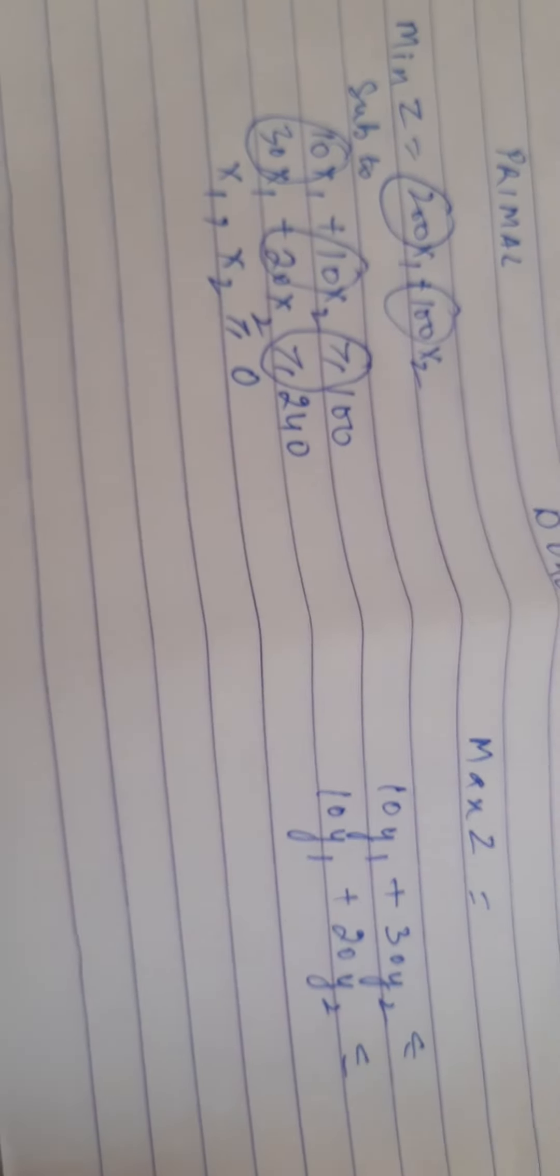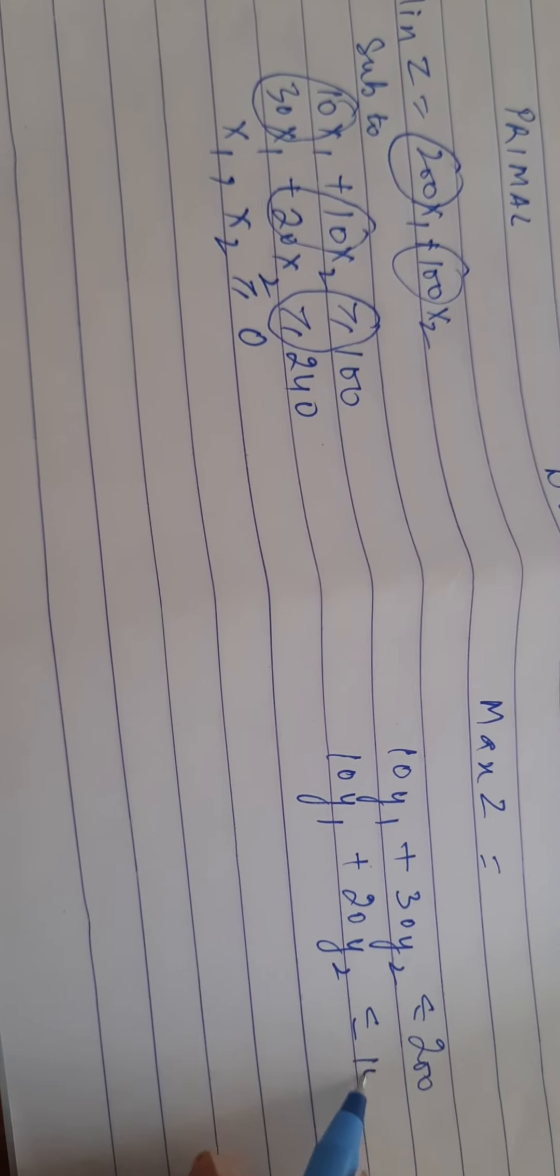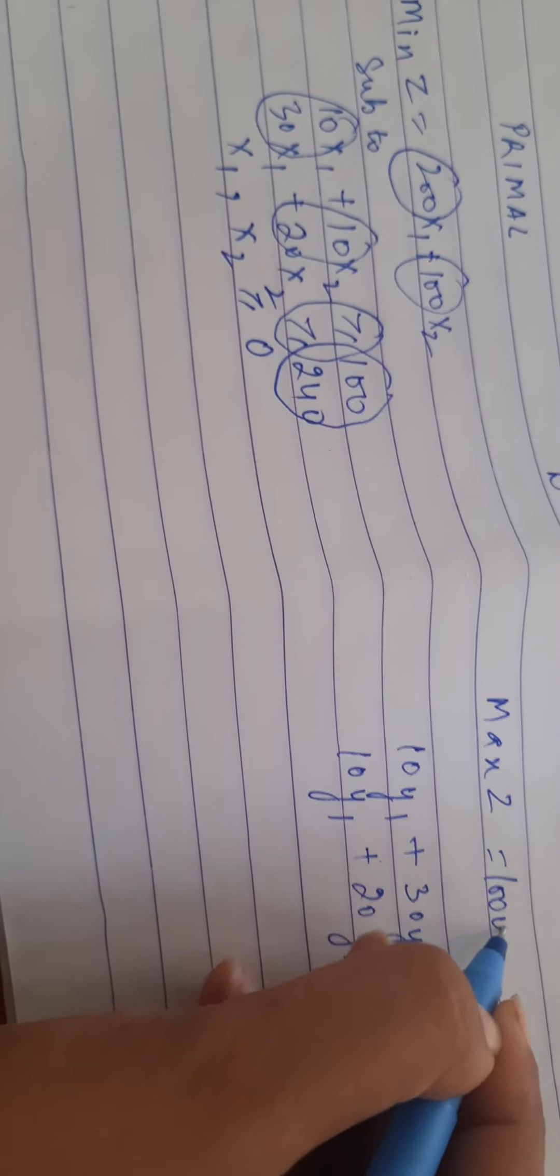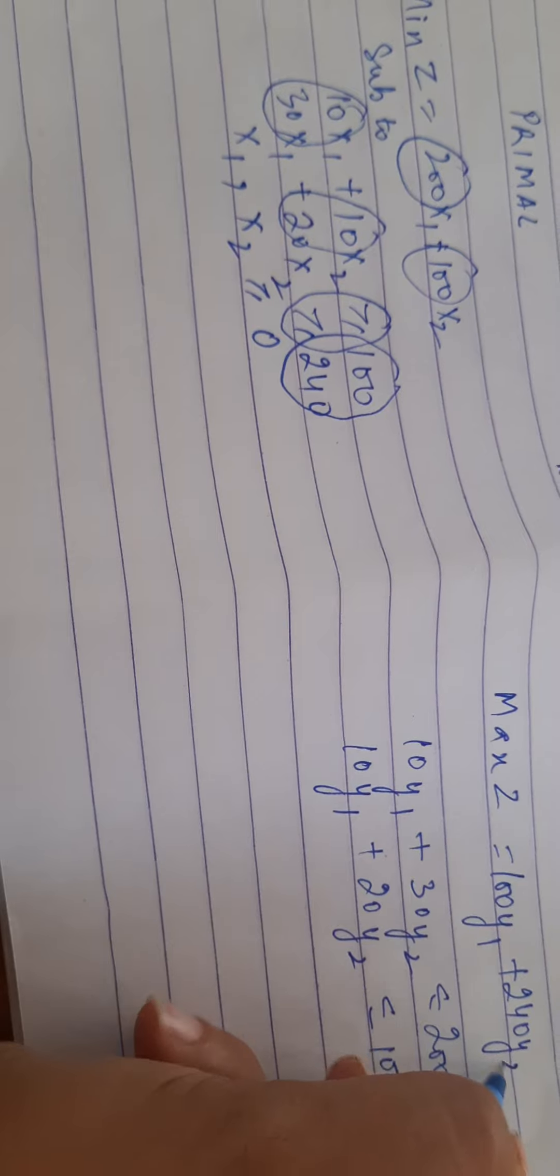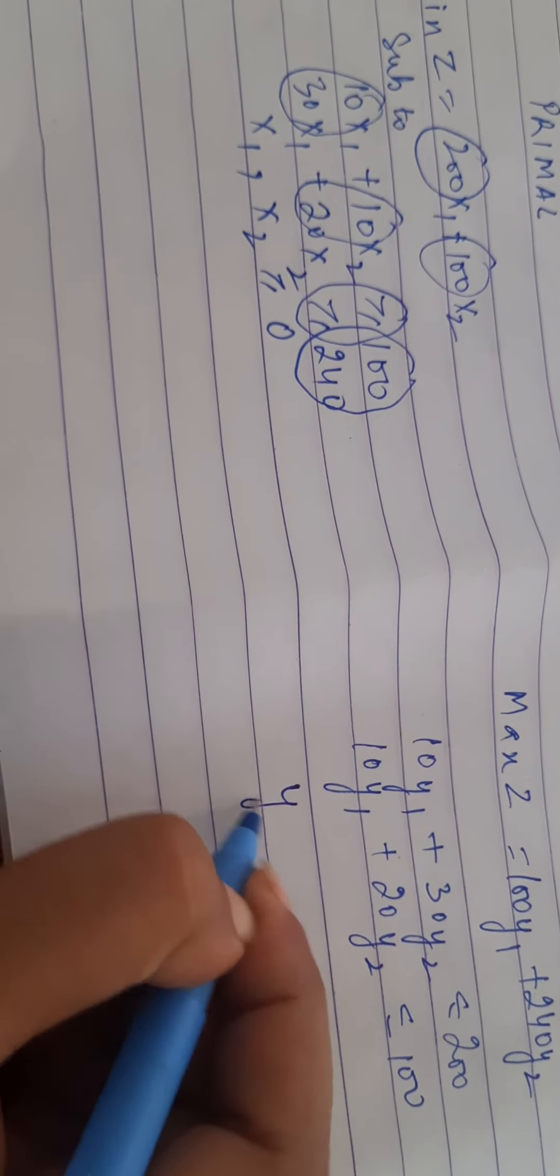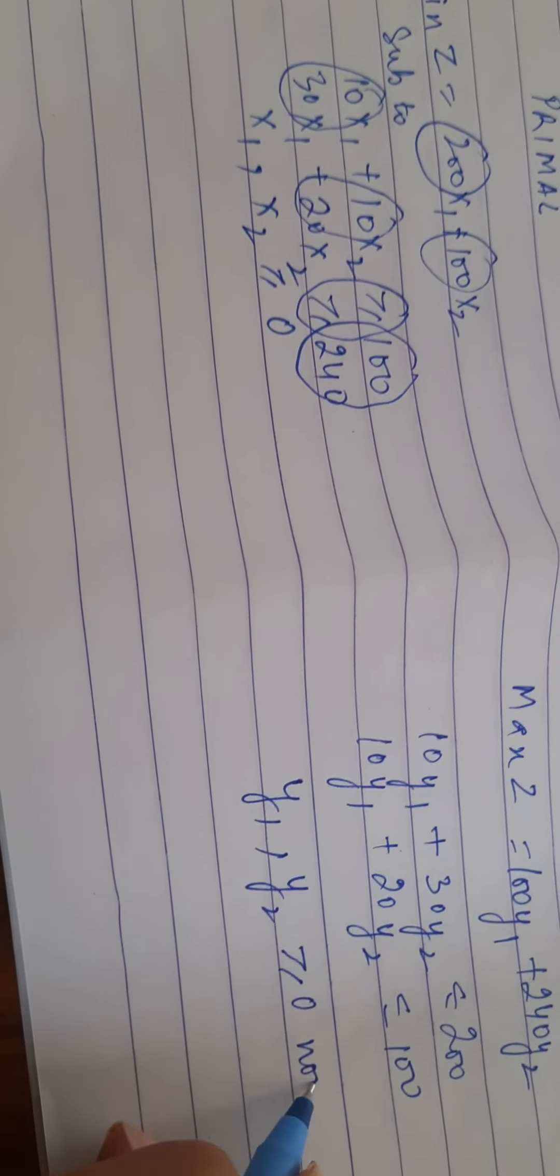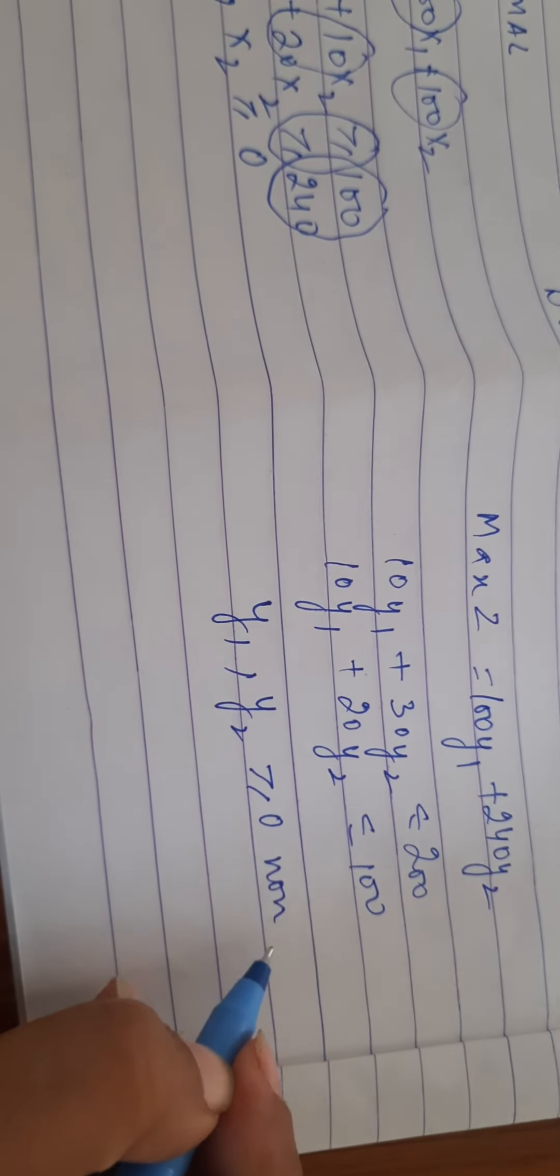The objective function would now become the constraints, 200 and 100 over here, 100 and 240. The constraints would now become the objective function, and the non-negativity constraint greater than or equal to 0.